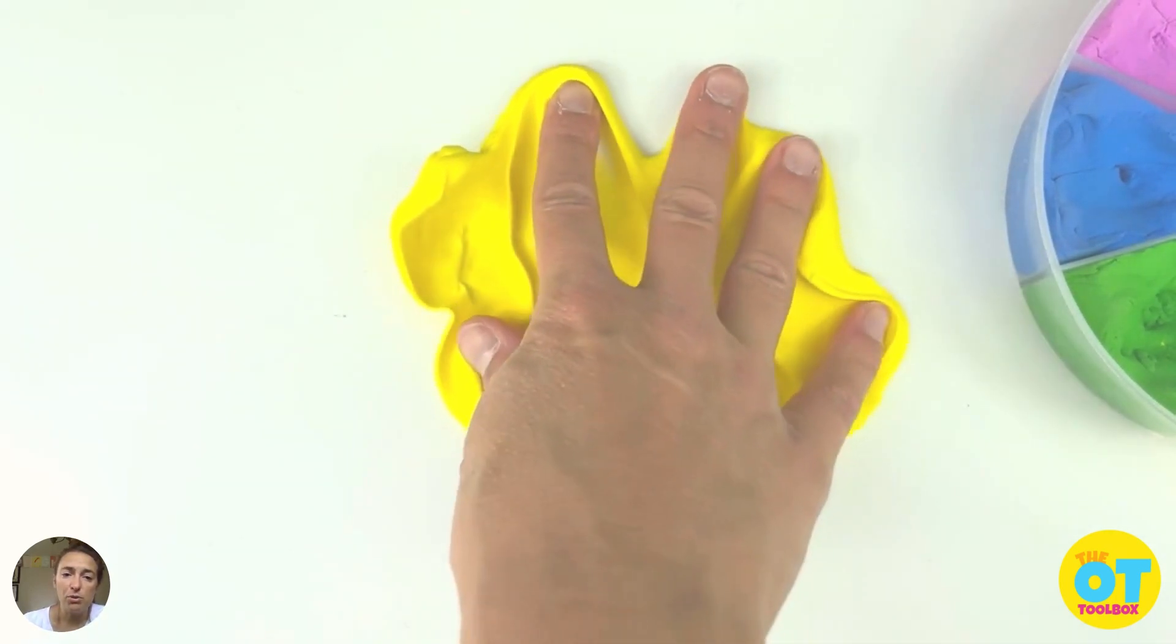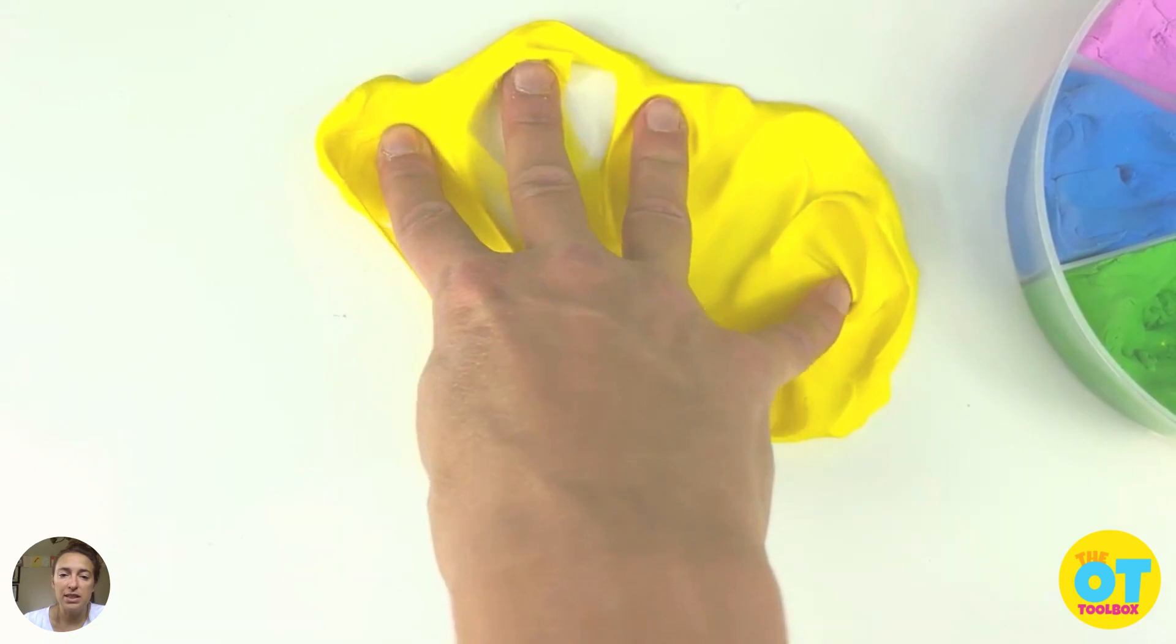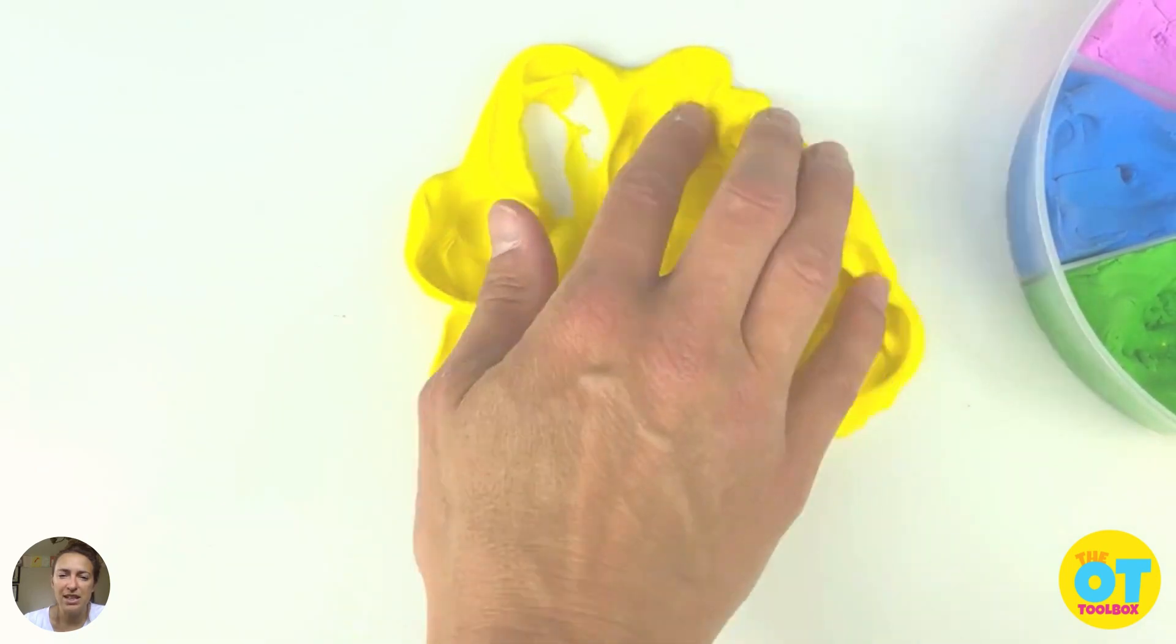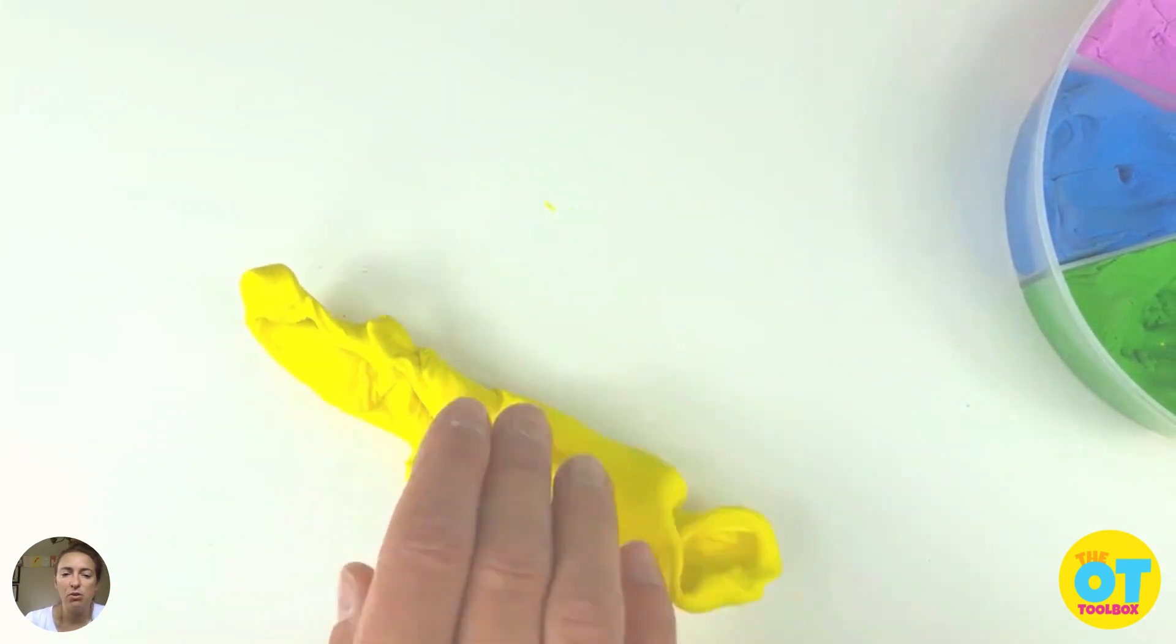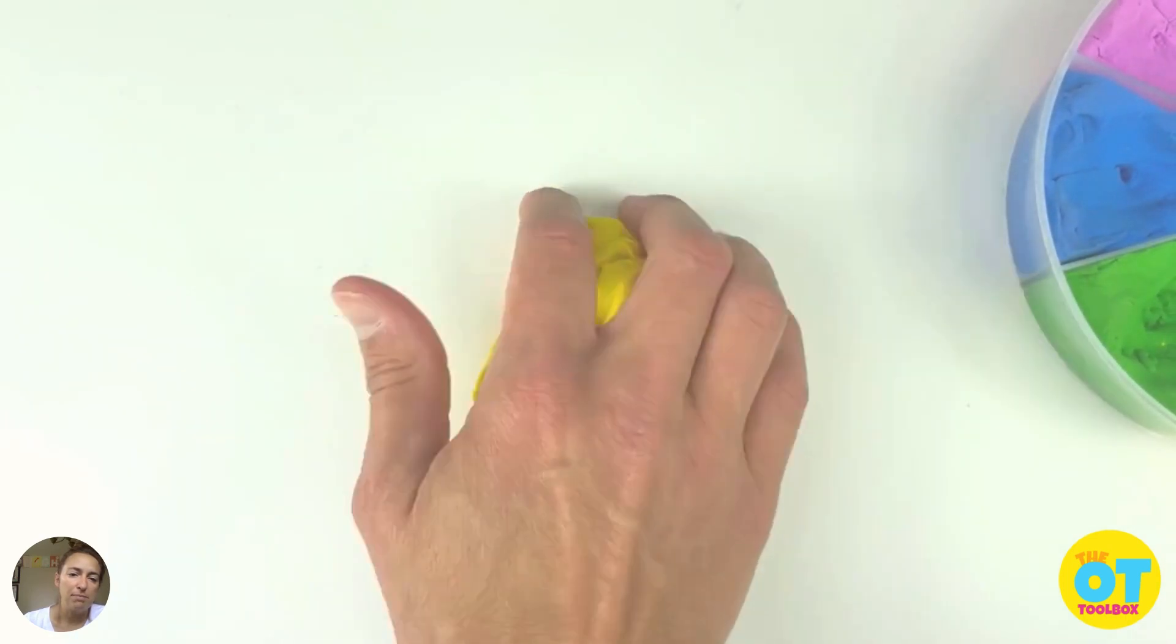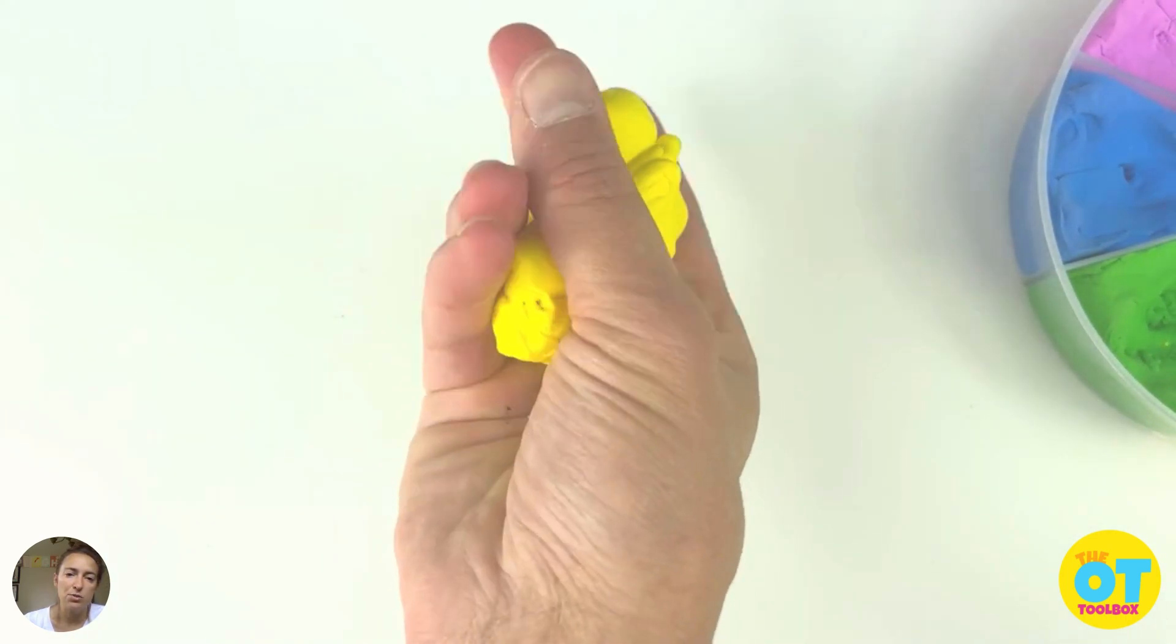And then next you'll put that Play-Doh down on the table and really spread and extend those fingers out into the Play-Doh. Roll it up and you can squeeze again.